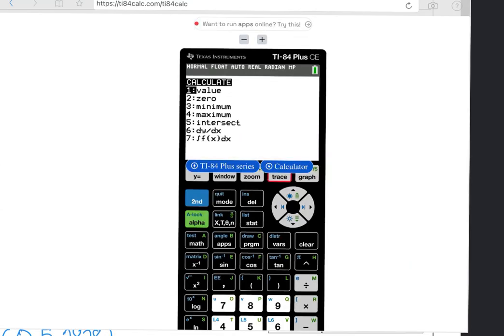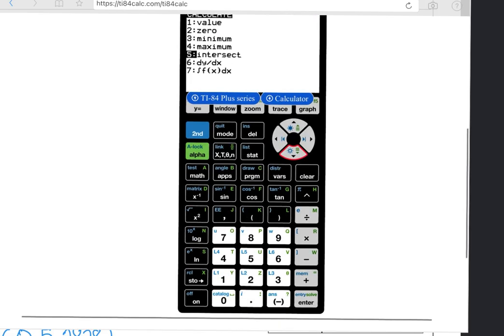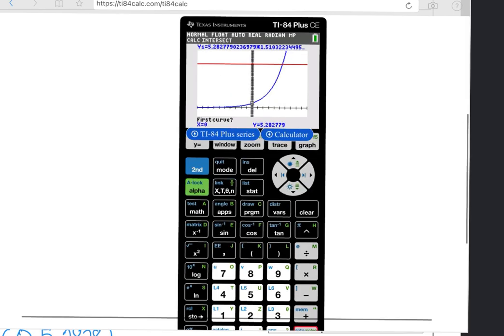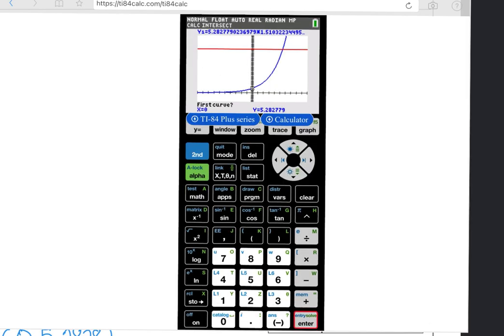Next, you want to press 2nd, and trace. That's going to give us the option to go find the intersection at number 5. So choosing that, it's asking for the first curve. So we're going to just press enter there.